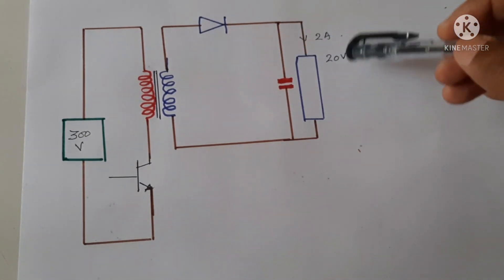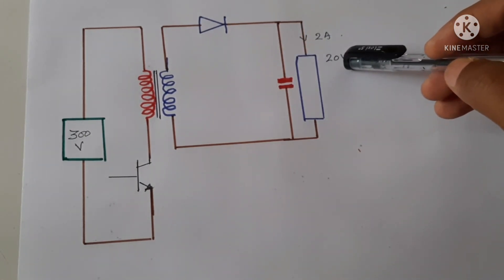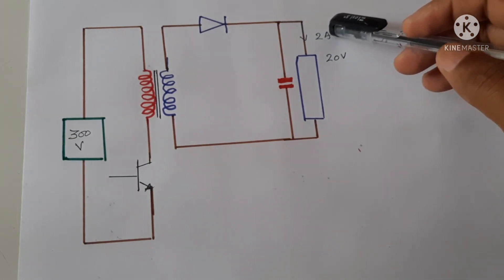We assume that the output voltage we want is 20 volts and the output current is 2 amperes.